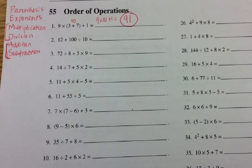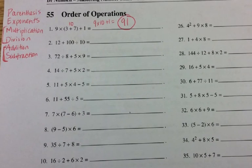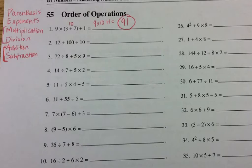Let's look at a couple of these problems. For number one, I had nine times the quantity of three plus seven, and then I'd add one. The first thing I do is the parentheses: three plus seven equals 10. I take that quantity and multiply it by nine. Ten times nine is 90, and then I'd add one. So my answer is 91.